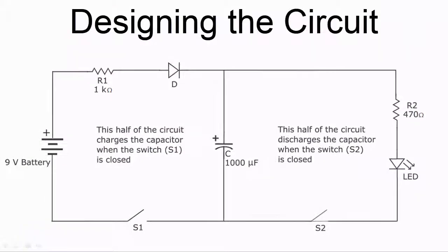So the only component we haven't mentioned so far is the diode. As with the LED, the diode only allows current to flow in one direction. The idea here is to prevent the current from flowing in the wrong direction towards the 1 kilo ohm resistor and battery when the capacitor discharges.